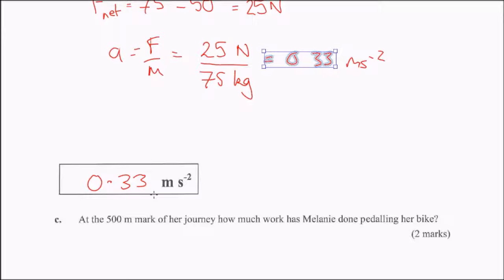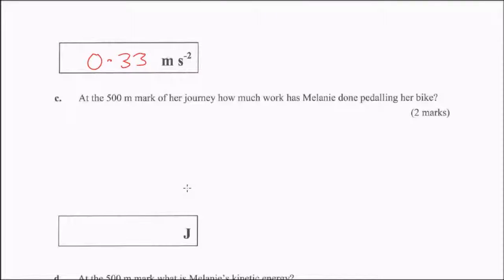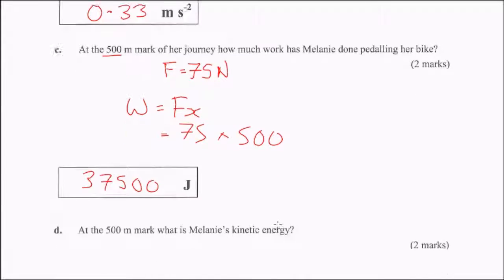Now, at the 500 metre mark of her journey, how much work has Melanie done pedalling her bike? All we need to think about is the fact that we know how much force she has been applying, so the force from Melanie is 75 newtons. We know the displacement here, so it's just a case of W equals Fx, which is 75 times 500, and we get 37,500 joules.